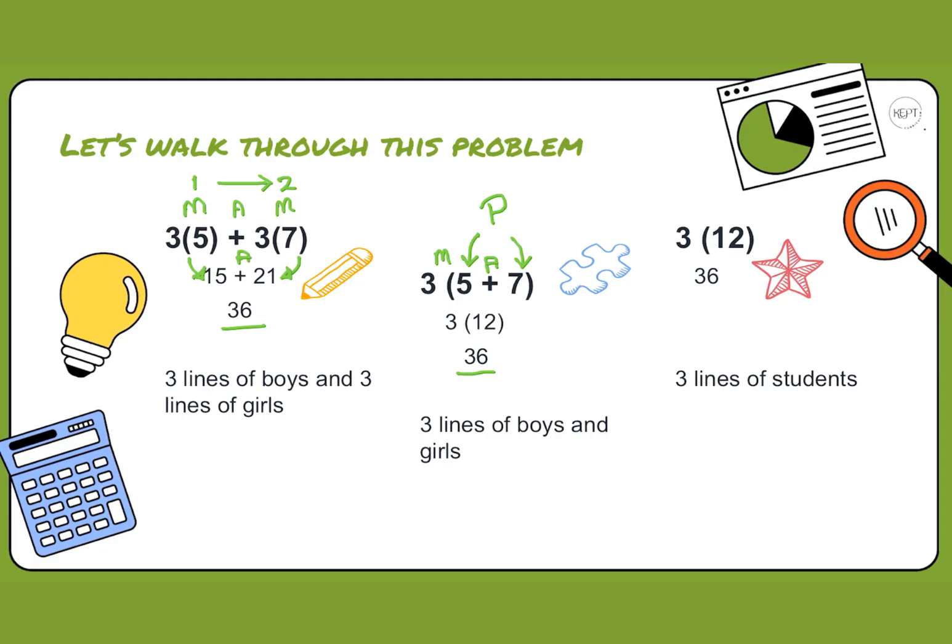We've just shown a different way of expressing the exact same information, but one is more specific than the other. Lastly, we have three lines of students. This one is the least specific because we don't know how many students are boys and how many are girls. We just know that we get a total of 36 students.